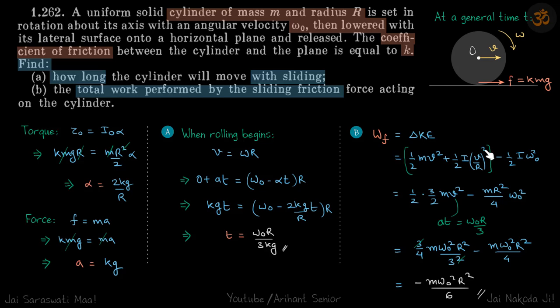Initially it was only rotating with omega naught, so initial kinetic energy is half I omega naught squared. We put the value of v as omega r. Actually, we can directly put v equals at, and a we already know.